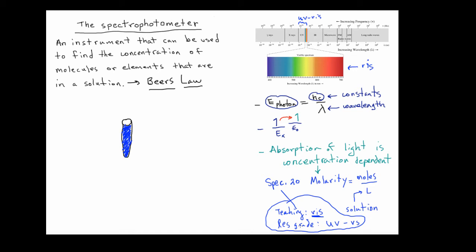The most basic thing to understand is that any solution with coloration visible to the naked eye can be characterized this way. The spectrophotometer is a box generally not much bigger than a toaster oven. If you open it up, you'll find a lamp inside. The sample is placed in a slot in the instrument. The test tube holding the sample has a special name — it's called a cuvette.